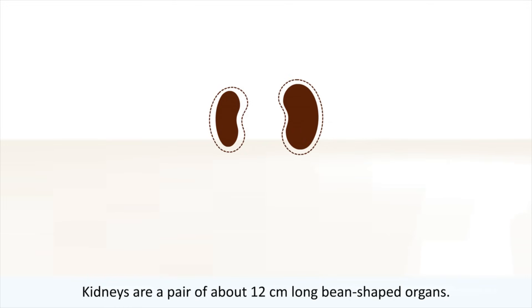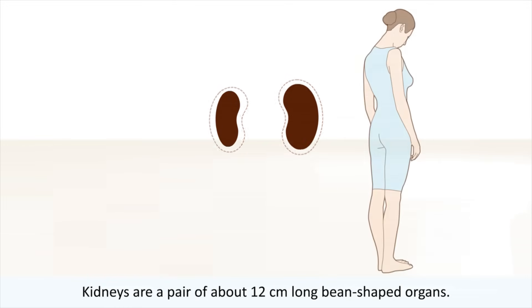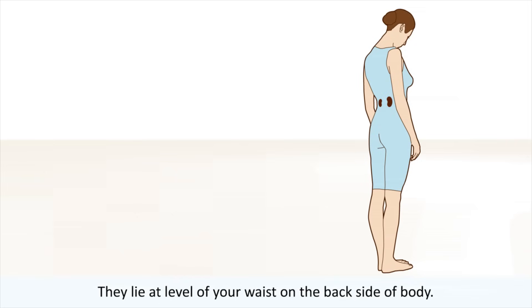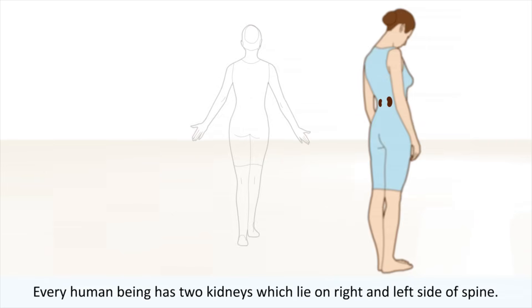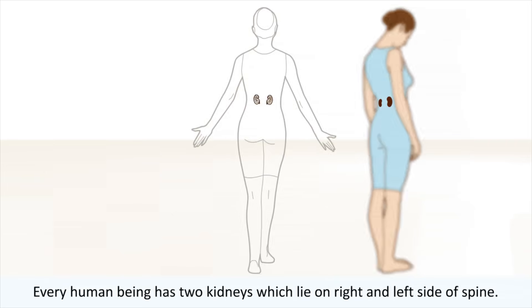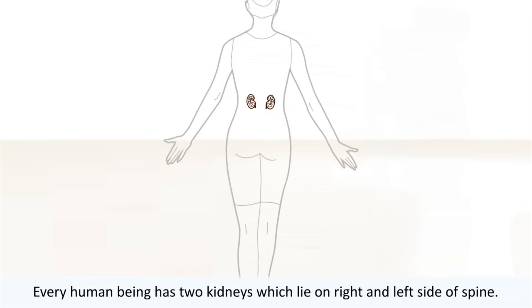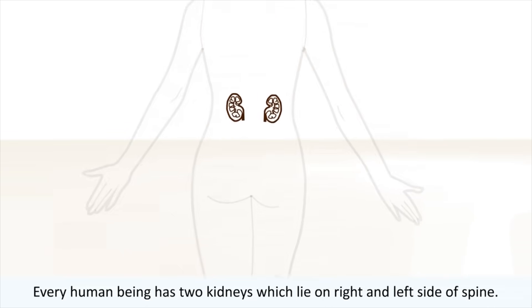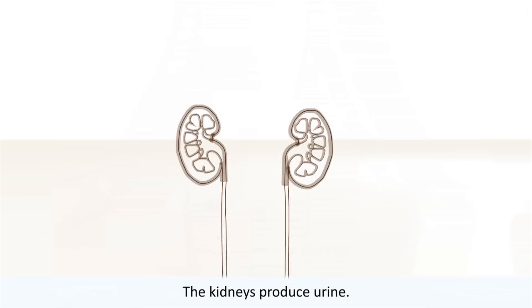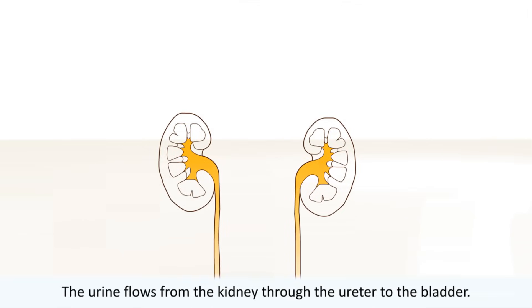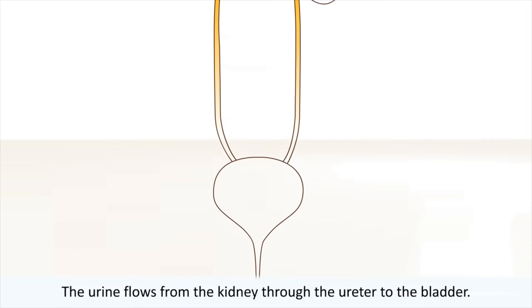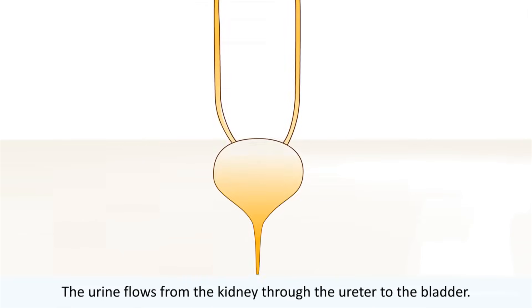Kidneys are a pair of about 12 centimeter long bean-shaped organs. They lie at the level of your waist on the back side of your body. Every human being has two kidneys, which lie on the right and left side of the spine. The kidneys produce urine; the urine flows from the kidney through the ureter to the bladder.